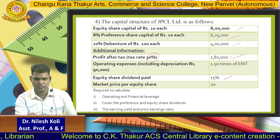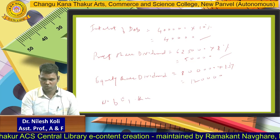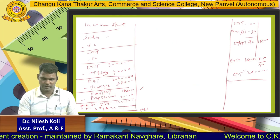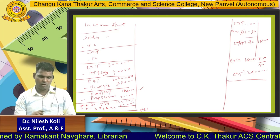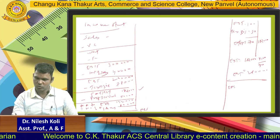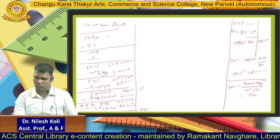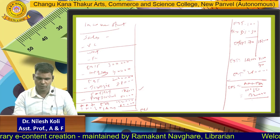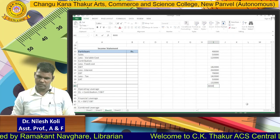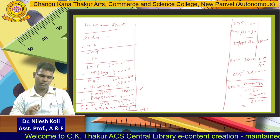Total equity share capital = 8 lakh, face value = Rs 10 each, so number of equity shares = 8,00,000 / 10 = 80,000 shares. EPS = amount available to equity shareholders / number of equity shares = 1,32,000 / 80,000 = 1.65. So EPS is Rs 1.65.